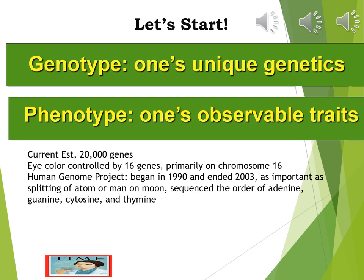The Human Genome Project began in 1990 and was completed in 2003. In terms of its importance, it's comparable to the splitting of the atom or the first man on the moon — it was that big. What it did was sequence the order of our bases: adenine, guanine, cytosine, and thymine. A really quite huge and hugely important undertaking.